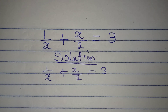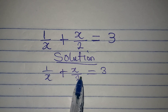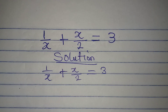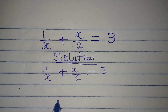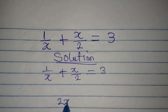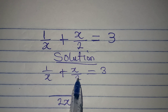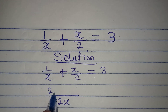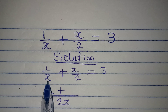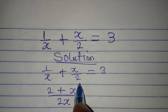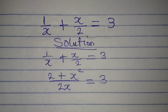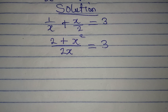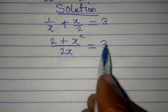But if you don't want to find the LCM, just multiply the denominators together so that we'll have the common denominator which is 2x. Then we have 2 times 1 which will be 2, plus x times x that will give us x squared, and this is equal to 3.